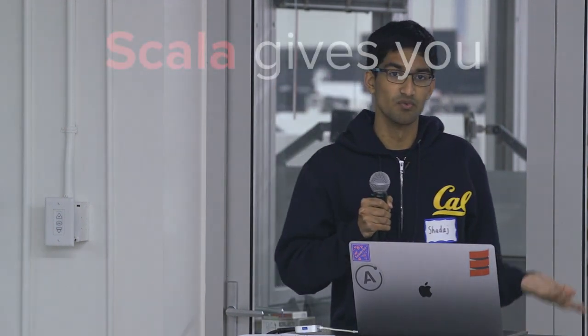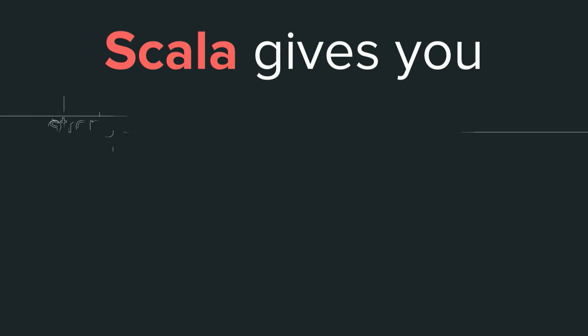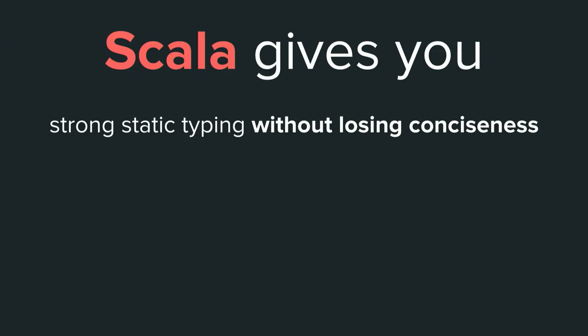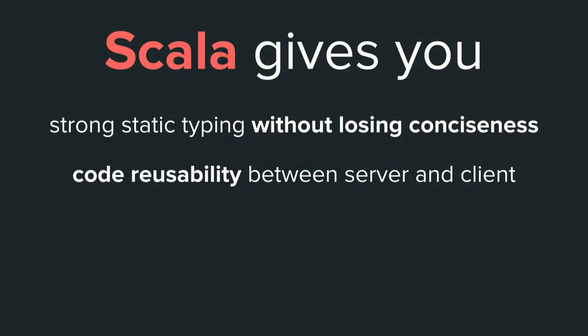Why not just use JavaScript? After all, it's React.js, not React.Scala. The really important thing is what Scala gives you. First is strong static typing — if you're a Scala developer going into JavaScript, you'll really miss that. Even with tools like TypeScript you lose a lot of conciseness. Scala gives you the best of both worlds: with type inference you have strong static typing without losing the conciseness you expect from languages like JavaScript.